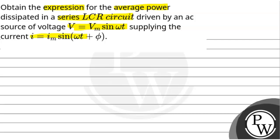the current I equals Im sin(ωt + φ). This is a particular situation with an LCR circuit. We need to derive the average power expression given the voltage and current.